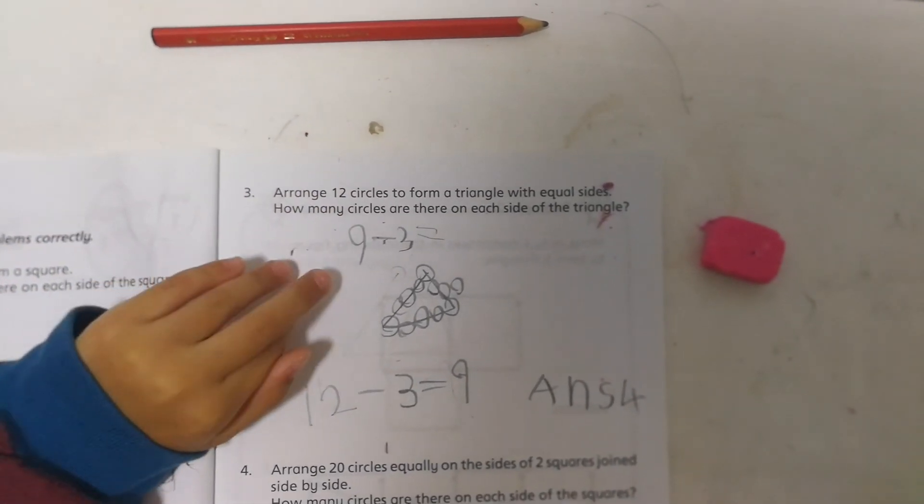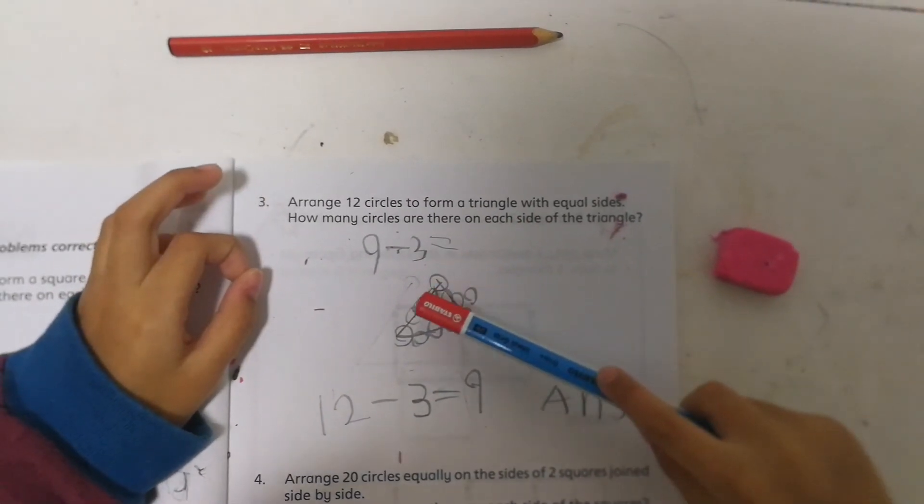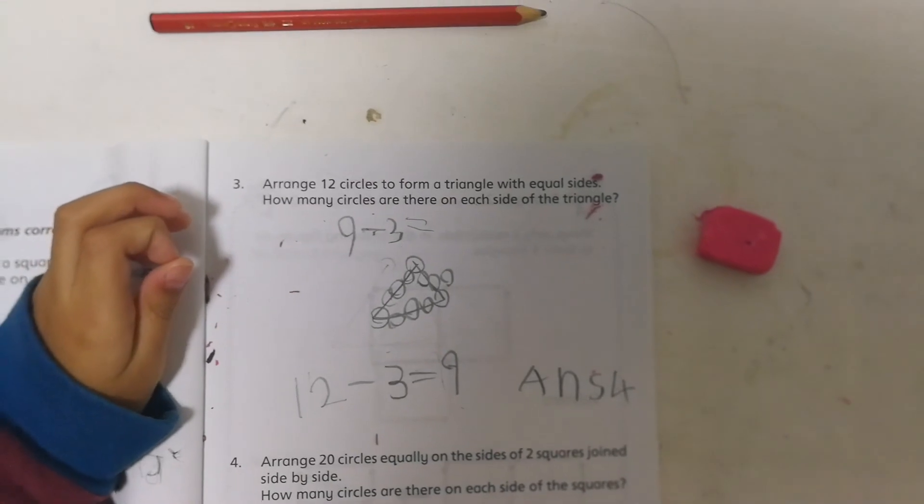Are you sure it's 4? Uh-huh. Because it's 4 on the side. Count. Is it 4 on the side? 1, 2, 3, 4, 5. Okay.